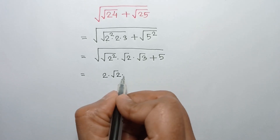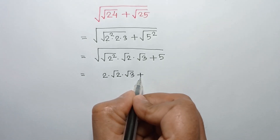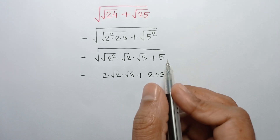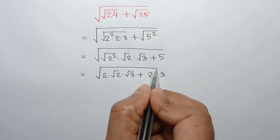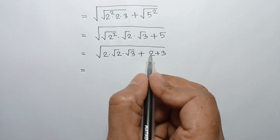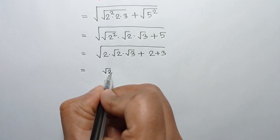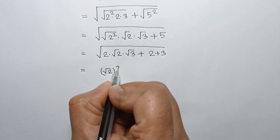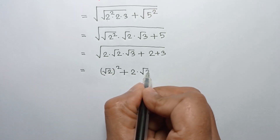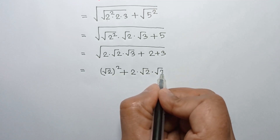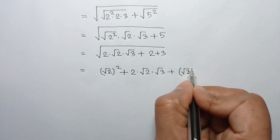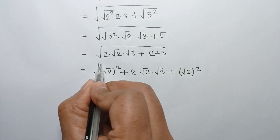2 times square root of 2 times square root of 3 plus 5 can be written as 2 plus 3. This equals square root of 2 whole square plus 2 times square root of 2 times square root of 3 plus square root of 3 whole square.